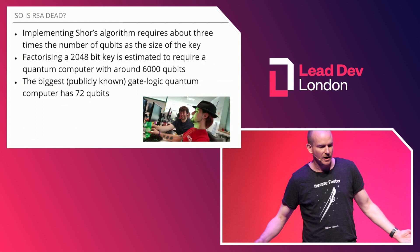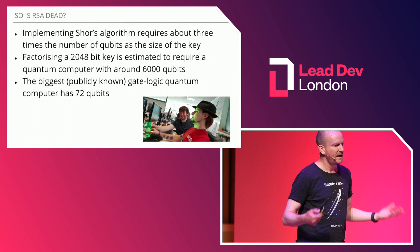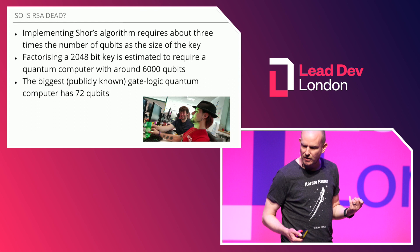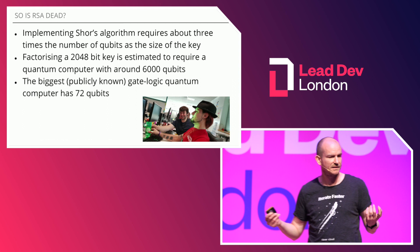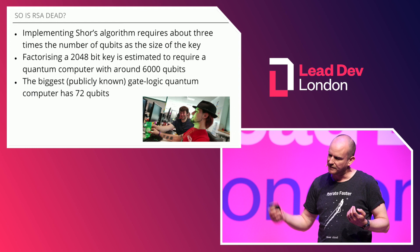So, is RSA dead? Well, you need a quantum computer with about three times as many qubits — that's the quantum bit — as the size of the key. You'd need about 6,000 qubits to factorize a 2,048-bit RSA key, so that's quite a long way off at the moment. The biggest known computer, as of about six months ago, had 72 qubits.